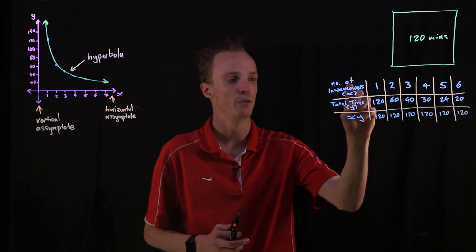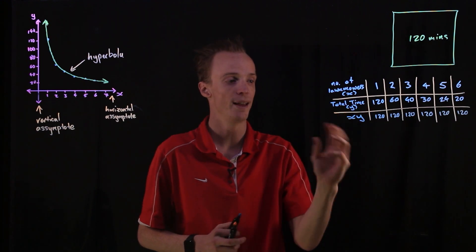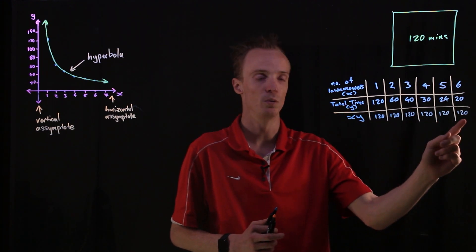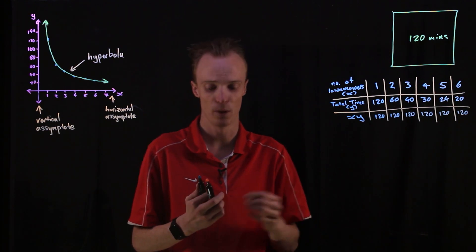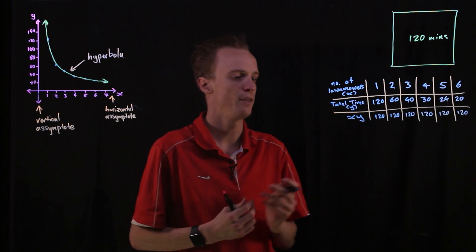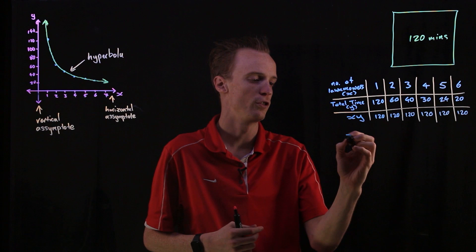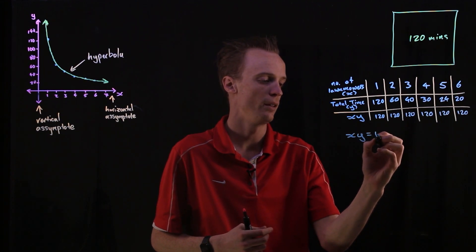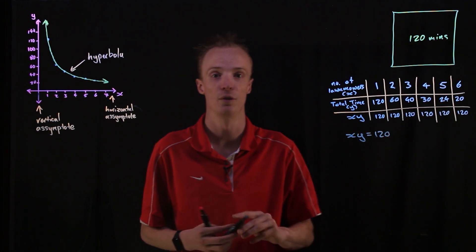So when I multiply my two variables, my x and y variable together, it always equals 120 in this situation. So what we can say from that is in this situation, when we multiply x with y, it'll always equal 120.